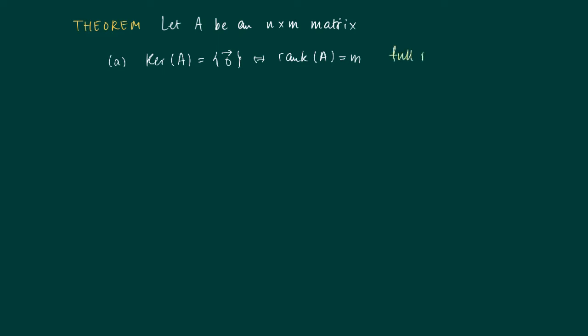So each column gets a pivot if we apply Gauss Jordan elimination to calculate ref of A.